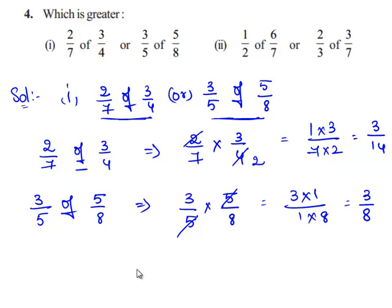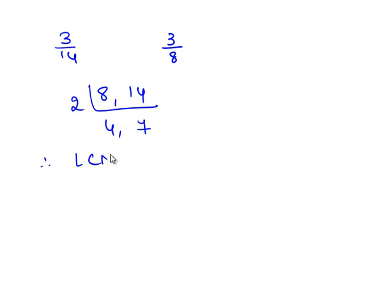Now we need to decide which is greater among 3 by 14 and 3 by 8. To compare two fractions, we need to have a common denominator. So let us take the LCM of 8 and 14. 2 goes in 8 four times and 2 goes in 14 seven times. Therefore, the least common multiple of 8 and 14 is 2 times 4 times 7 which is equal to 56.